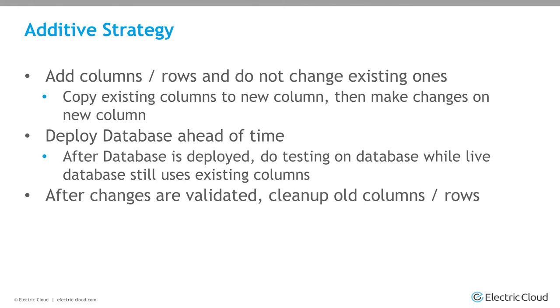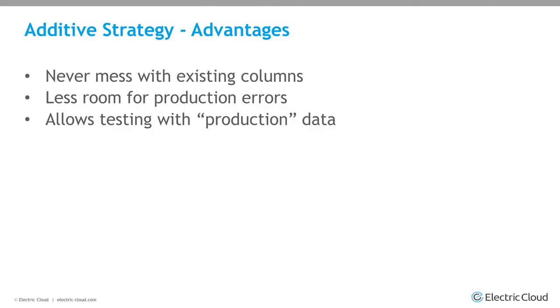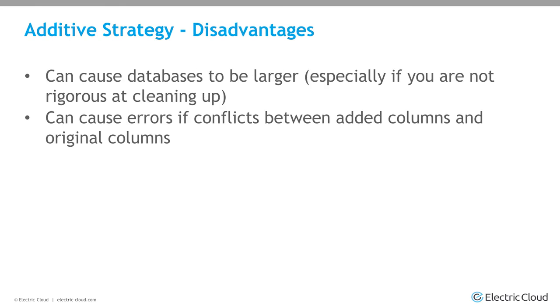The last strategy I call the additive strategy — instead of modifying or changing existing columns, you add a new column when you need something, copy the data to that new column, and once you've confirmed it works, you remove the old one. This means you're only deploying new code, so you don't have to worry about breaking things by updating a column incorrectly. You never mess with existing columns, and there's less room for errors. The disadvantage is databases can get rather large, but if you clean it up well, it's okay.